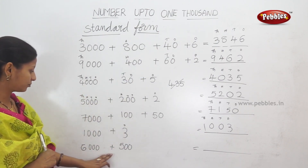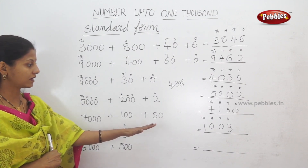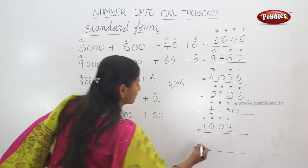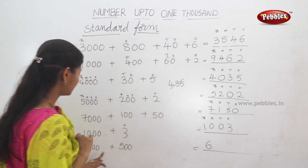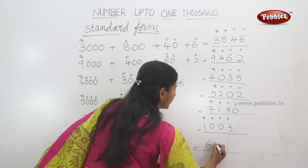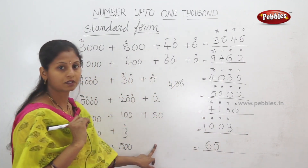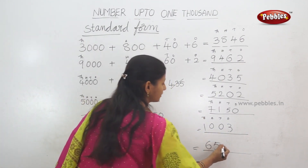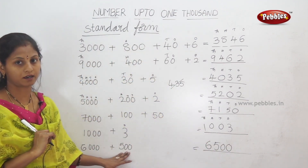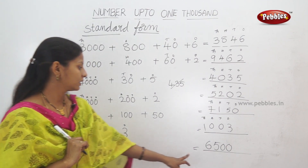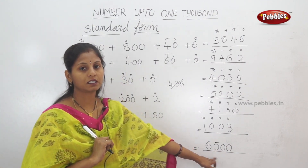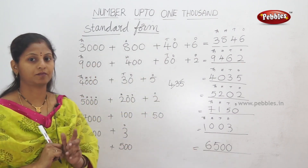Next: six thousand plus five hundred. So, we have place values. Any thousands? Six thousands. Six thousand. Plus any hundreds? Here we have 500. Five hundred. Tens and ones — no. So, hundreds; tens is zero. Ones is zero. So, six thousand plus five hundred: standard form is six-five-zero-zero. Four digit number. This is the standard form.